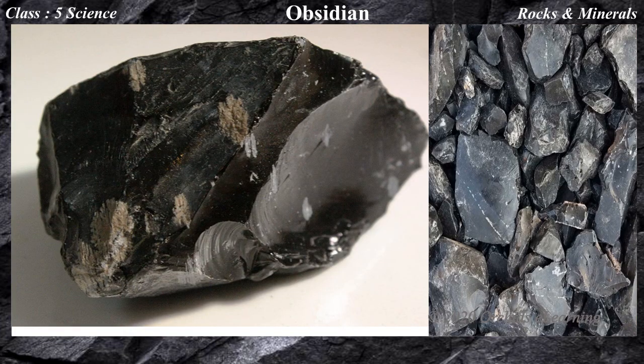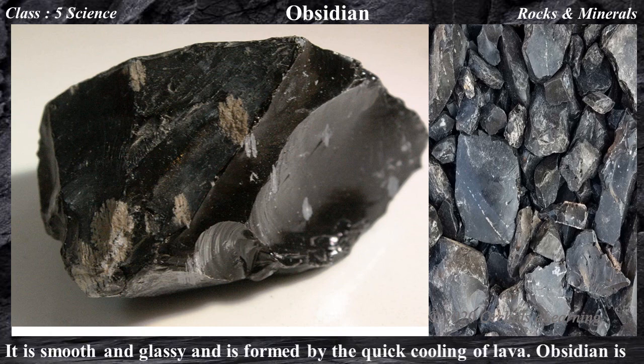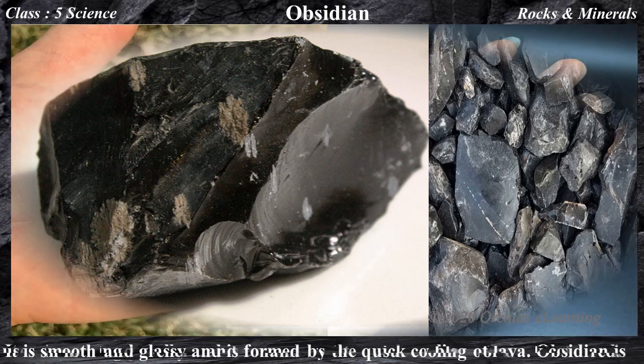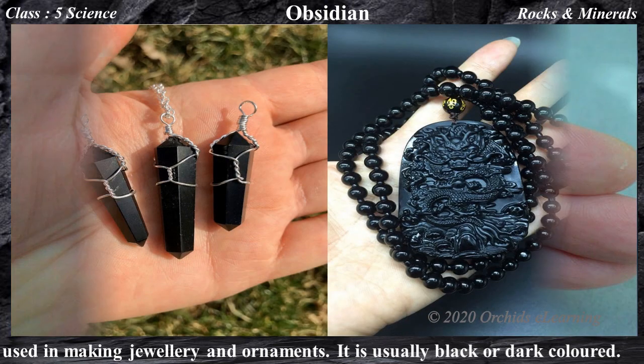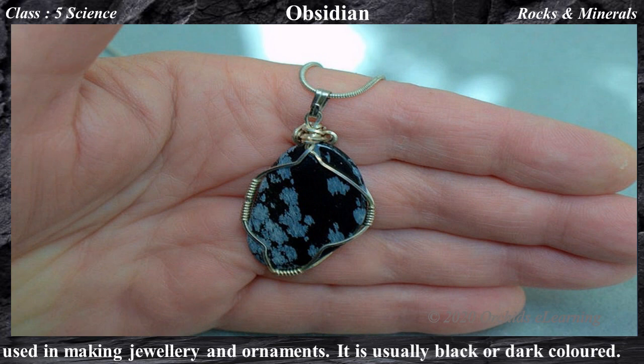Obsidian — it is smooth and glassy and is formed by the quick cooling of lava. Obsidian is used in making jewelry and ornaments. It is usually black or dark colored.